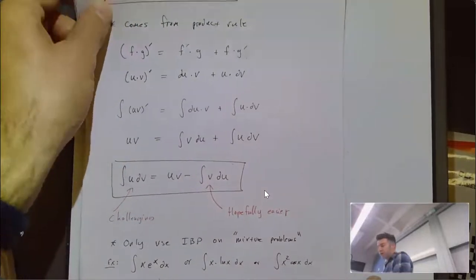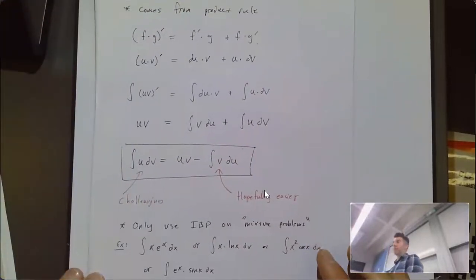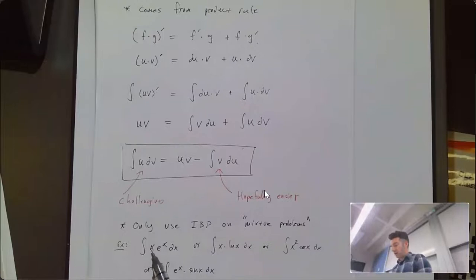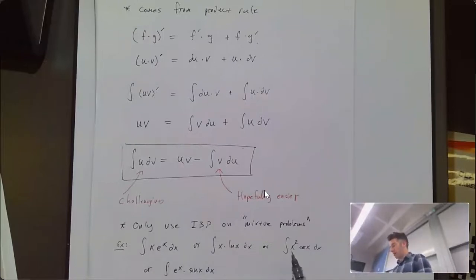All these are examples of mixtures: algebraic and exponential, algebraic and logarithmic, algebraic and trig, exponential and trig.